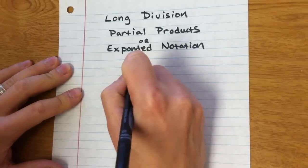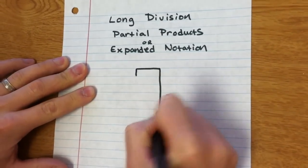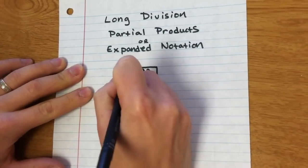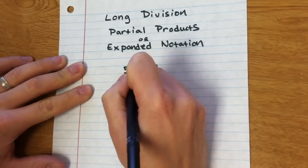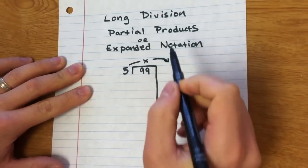So let's go ahead and do our first problem here. You're going to make a bracket. The bracket looks a little bit different than it used to. It has a longer side over here. And we're going to divide 99 by 5. Here's something I do just at first so they get the idea that they're going to multiply their way through this instead of dividing.